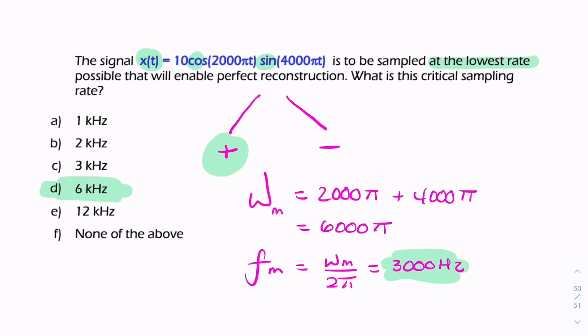That's slightly misleading because the rate has to be greater than six kilohertz - it can't be exactly six kilohertz. But the Nyquist rate is nevertheless six kilohertz.